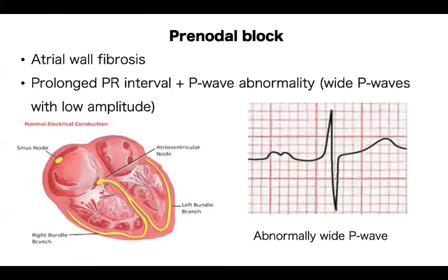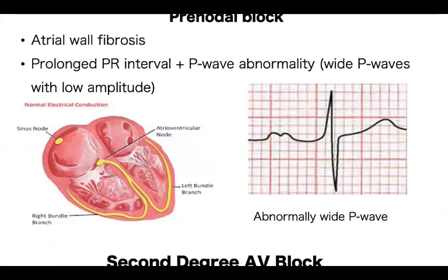It is equally possible to have an abnormal P wave — a bifid P wave — suggesting that the origin of excitation is coming from within the atrial wall itself. This is typically due to atrial wall fibrosis, which is the main etiology in patients developing pre-nodal block. We need to be familiar with this as well.